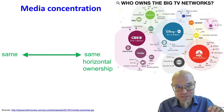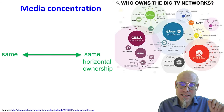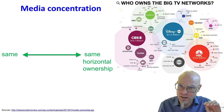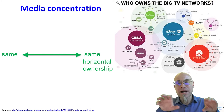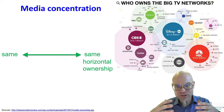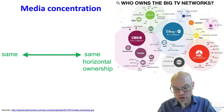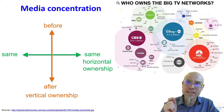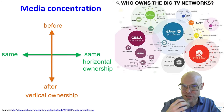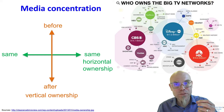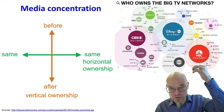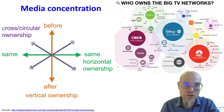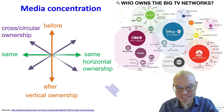We have two kinds of media concentration. One is when the same kind of digital product connects to the same kind — you basically buy a competitor — this is called horizontal ownership concentration. Or if you take somebody before or after in the supply chain, buying a supplier or integrating a customer, that is called vertical ownership concentration. There's also cross and circular ownership when both are combined.